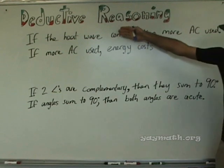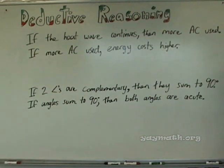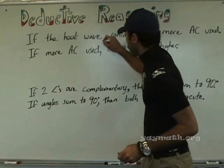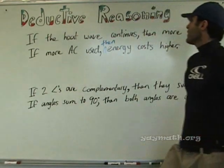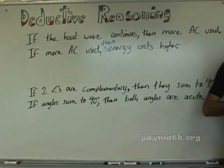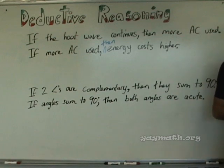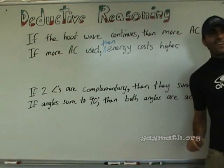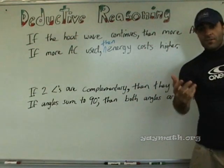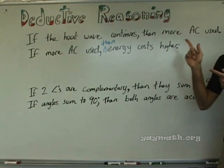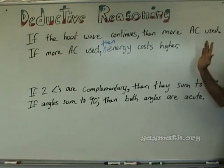The first rule is demonstrated by these two statements. If the heat wave continues, then more AC is used. If more AC is used, then energy costs higher. Looking at these two statements, is there a new conclusion that you can draw? If the heat wave continues, then energy costs higher. That's the first rule. Is that a logical jump that you're comfortable with?